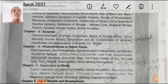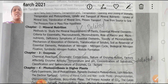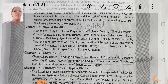Chapter 1, Transport in Plants — this is completely deleted. Chapter 2, Mineral Nutrition — this is also deleted. Chapter 3, Enzymes — the topics with tick marks are: chemical reactions, enzymatic conversions, nature of enzyme action, factors affecting enzyme activity, classification, nomenclature of enzymes, and cofactors.